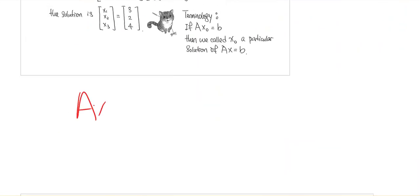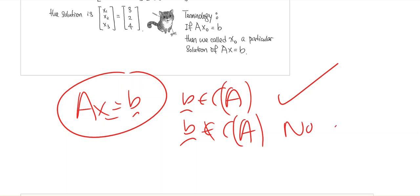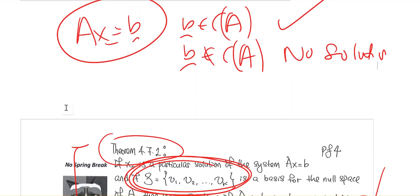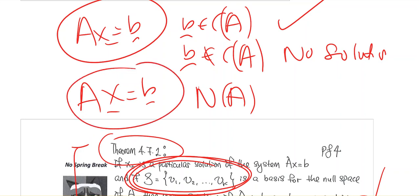Let me summarize. For Ax equals b: if b is in the column space of A, then we have solutions; if b is not in the column space of A, we do not have a solution — the system is inconsistent. For the null space: it does not tell you whether or not the system has a solution. Assuming the system has a solution, if the null space of A is trivial, the solution is unique.